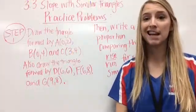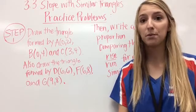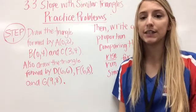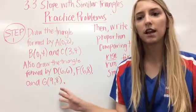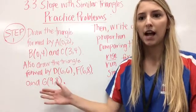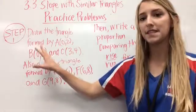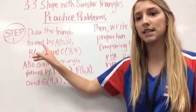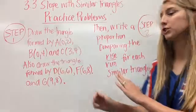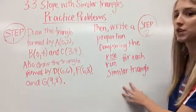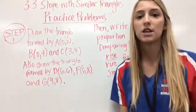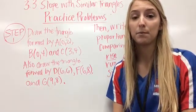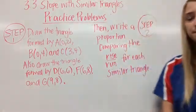This is your practice problem for tonight. It is only one problem. You can do it in one of the leftover graphs that are still in your composition book. It looks like a lot of directions, but it's really not that bad. Just remember, on this part, I'm just asking you to plot two triangles using these coordinates. And then, I want you to write a proportion comparing the rise over run for similar triangles. So, this is just like example number one that we did previously in the video. Thank you.